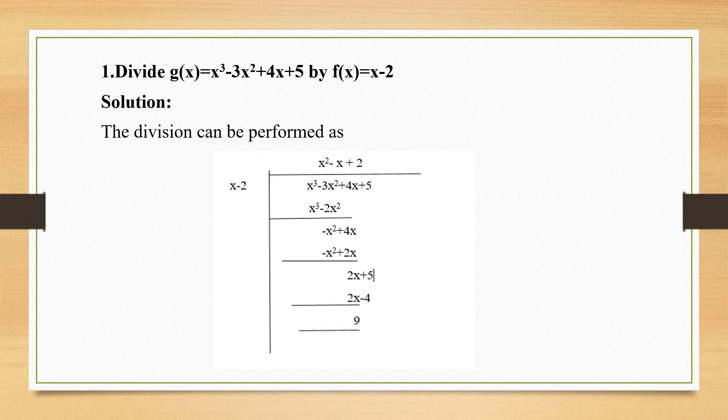Again, take the first number minus x squared divided over x, I am getting minus x, write it on top as the quotient term. Take that minus x and multiply by this, so you will be getting minus x squared, minus of minus is plus 2x. Again change the sign, cancel out x squared. If I change the sign it will be minus here, so it's going to be 4x minus 2x, my answer is plus 2x. Again take this plus 2x divided over x, getting plus 2.